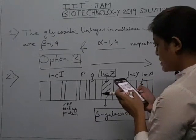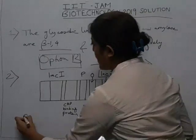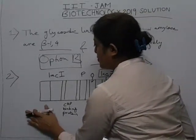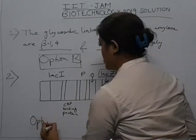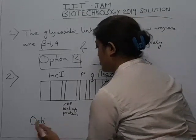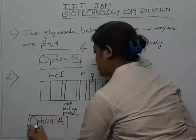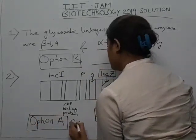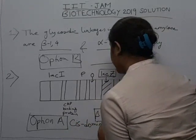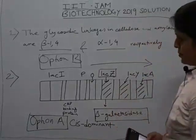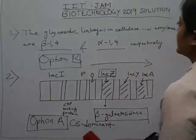So this particular operator is cis-dominant on the lac z or beta-galactosidase coding gene. The answer is cis-dominant — that is option A.